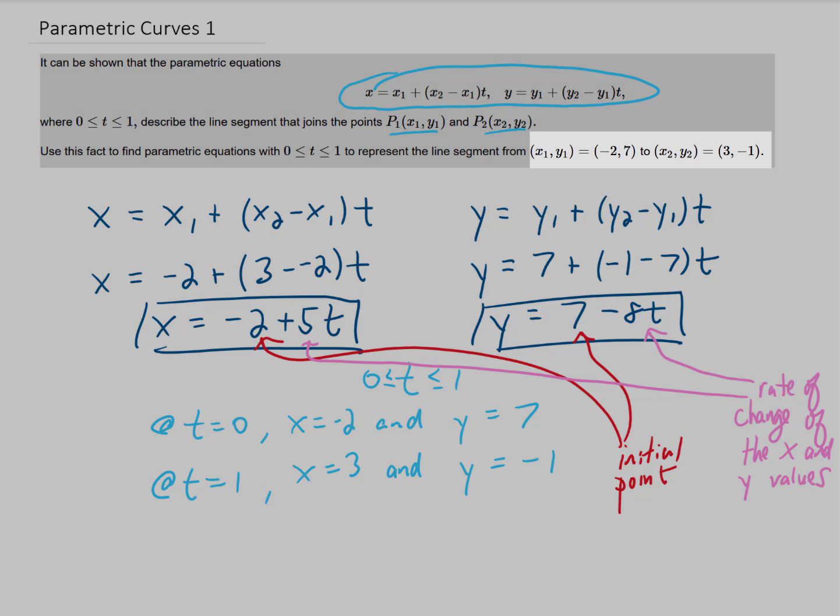You can see by looking at these two points up here that the x value changes 5 units between our two points, and our y value changes negative 8 units between our two points.